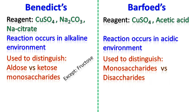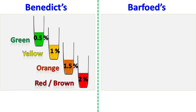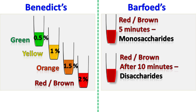When the reaction is carried out in Benedict's test, the precipitate obtained can either be green, yellow, orange, or red-brown in color — each color represents a different concentration of sugar. Whereas in Barford's test, it is the red color precipitate which is obtained.